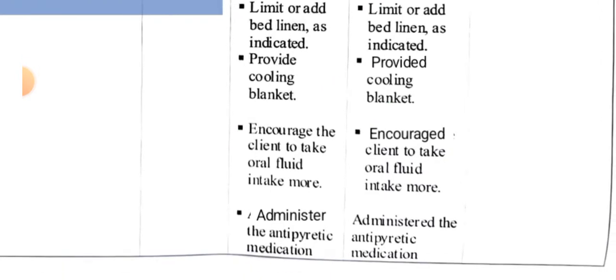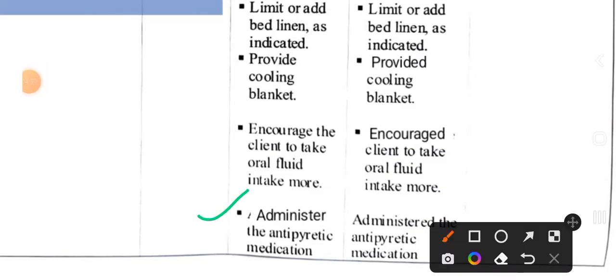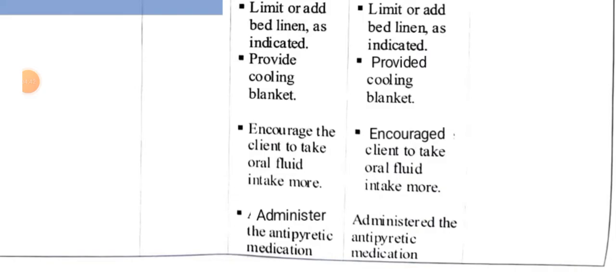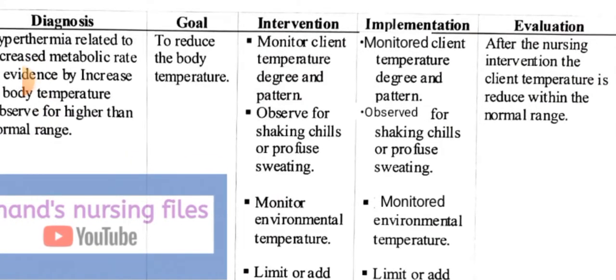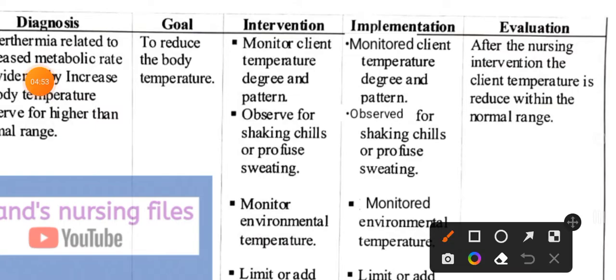Next intervention: administer antipyretics — medications to reduce fever. Implementation: administer antipyretic medication. After these interventions, we reach the last stage of the nursing process — evaluation. After the nursing interventions, the client's temperature is reduced to the normal range of 98.6°F. This concludes the first nursing diagnosis for hyperthermia.